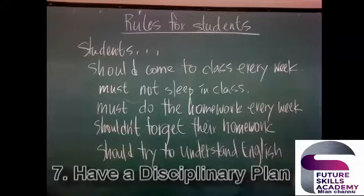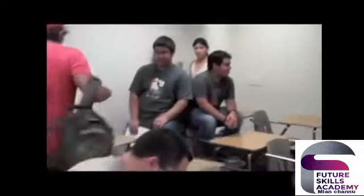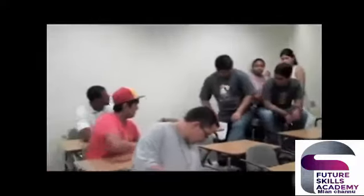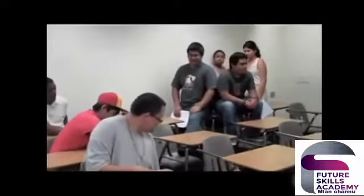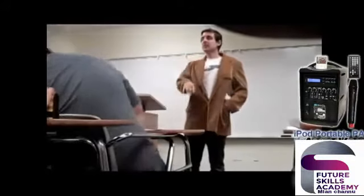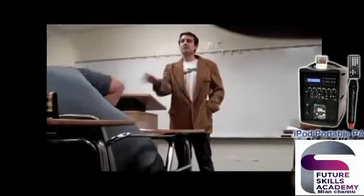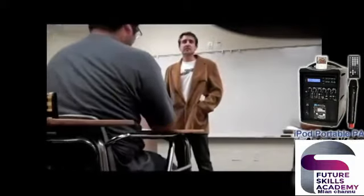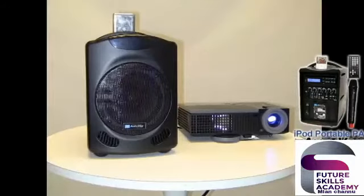Number seven: have a clearly expressed disciplinary plan with consequences. Make sure students know the disciplinary ladder well. Any hint of ambiguity can leave a loophole for excuses, and students are great at making excuses. Warn students when they are close to breaking a rule so there will be no ambiguity when that line is crossed. If you constantly raise your voice to get the attention of the class, consider investing in a classroom amplification system, which can save your voice by projecting it. The iPod portable PA system is a great system for classrooms because it features an iPod dock that simultaneously plays and charges your iPod, and also has an output for a projector.